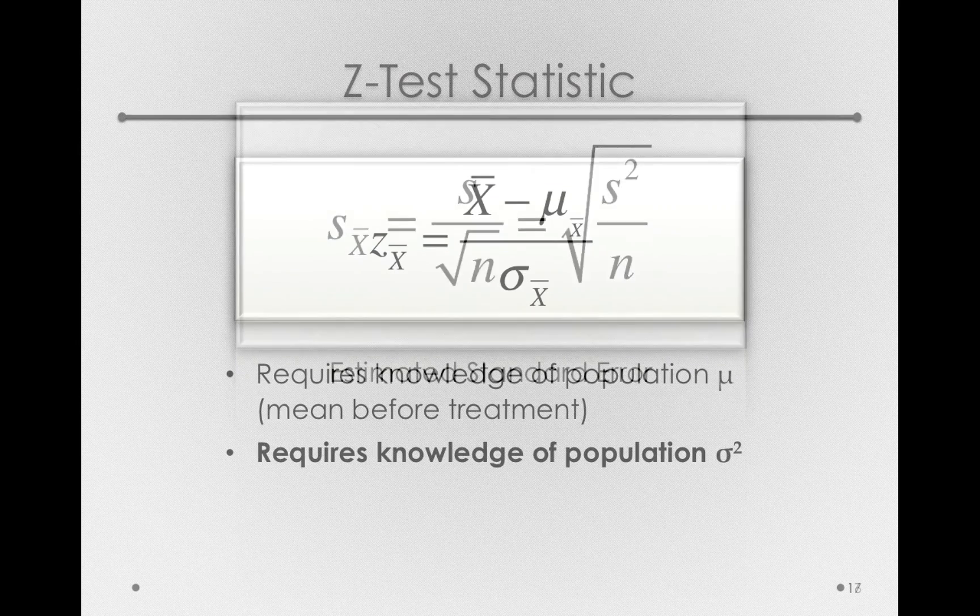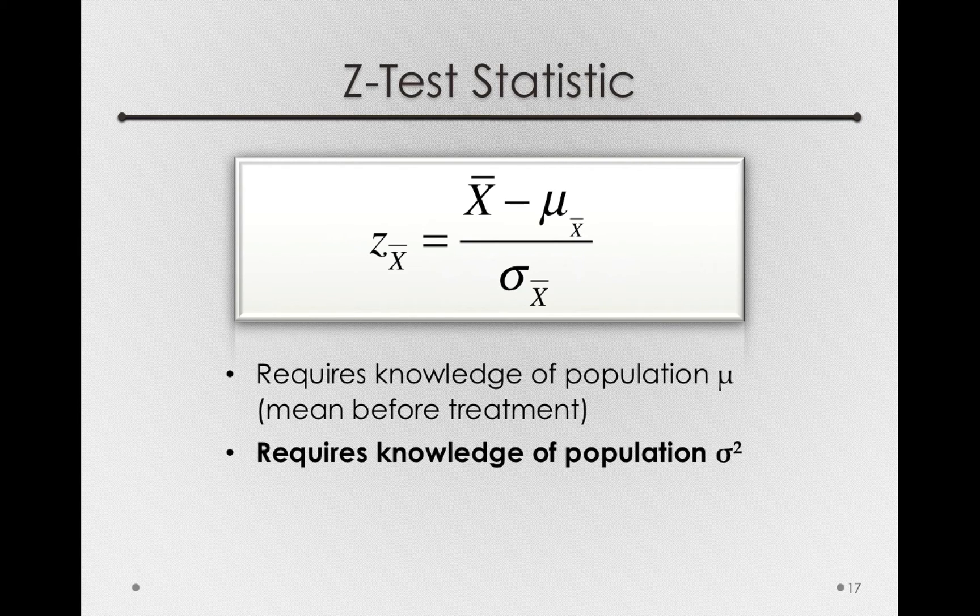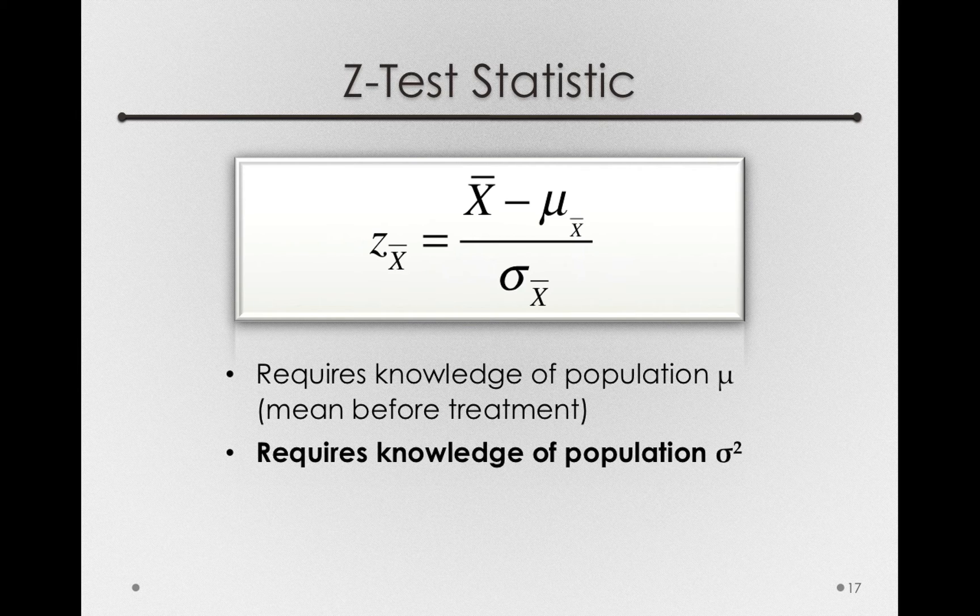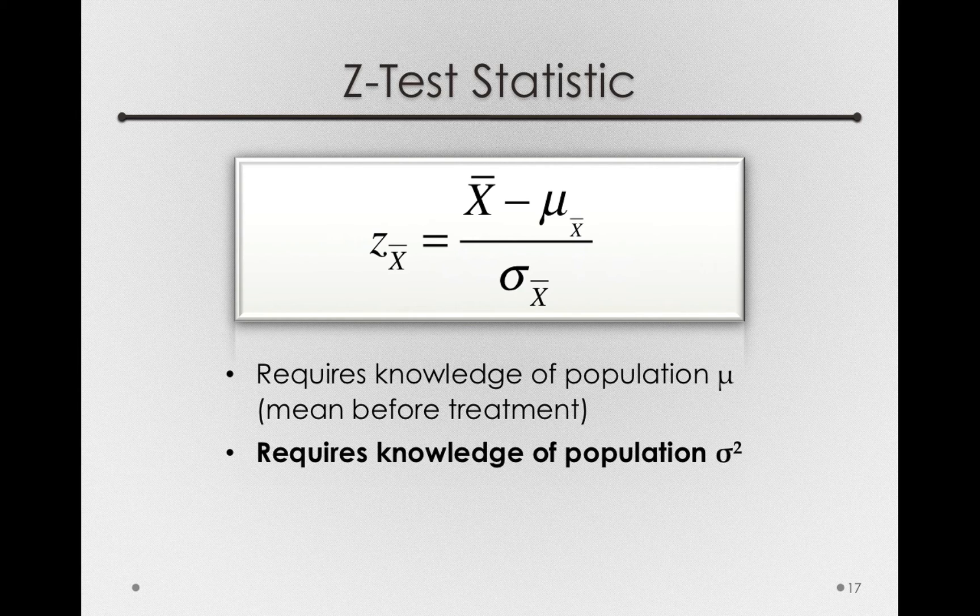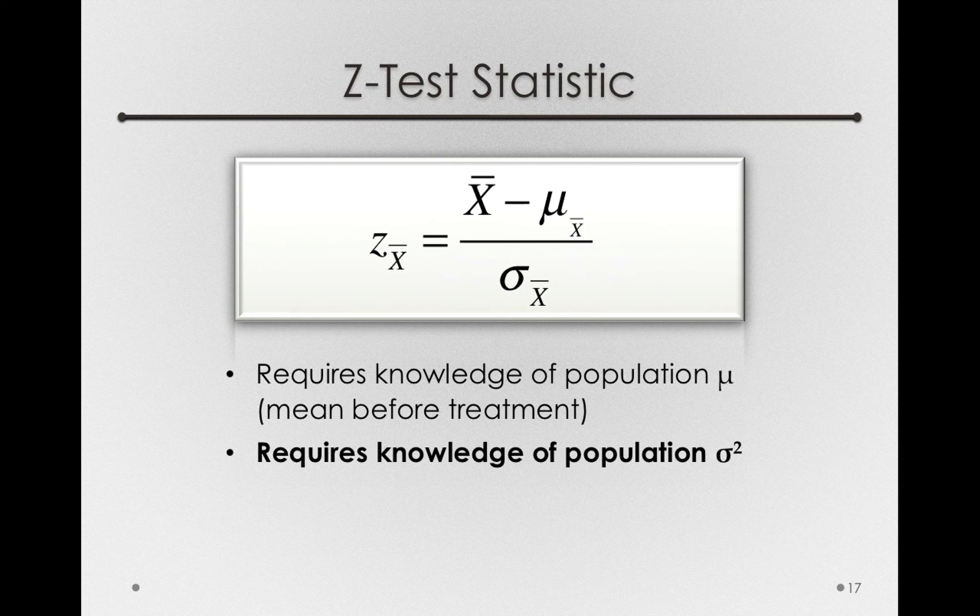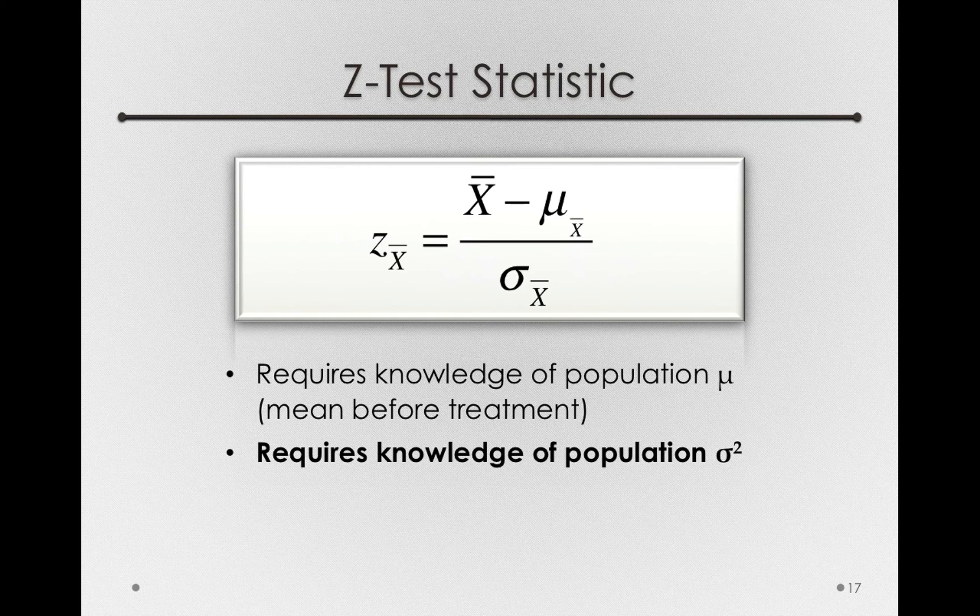Notice that if we do this, we will not be calculating a z-test statistic. That is, in the denominator of our test statistic, we will not have the true standard error. Instead, we'll have that s sub x bar. If we do this, the distribution of our test statistic will no longer be z. It will no longer be unit normal. Instead, it will follow a special distribution known as the t-distribution.